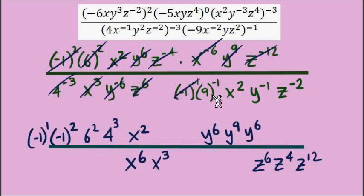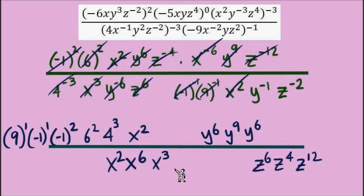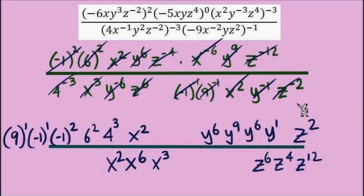9 to the power of negative 1 also moves up to the numerator. x squared has a positive exponent so it stays in the denominator. y to the negative 1 needs to move, and z to the negative 2 also needs to move. Everything now has a positive exponent and we're ready to begin combining the numbers and variables.